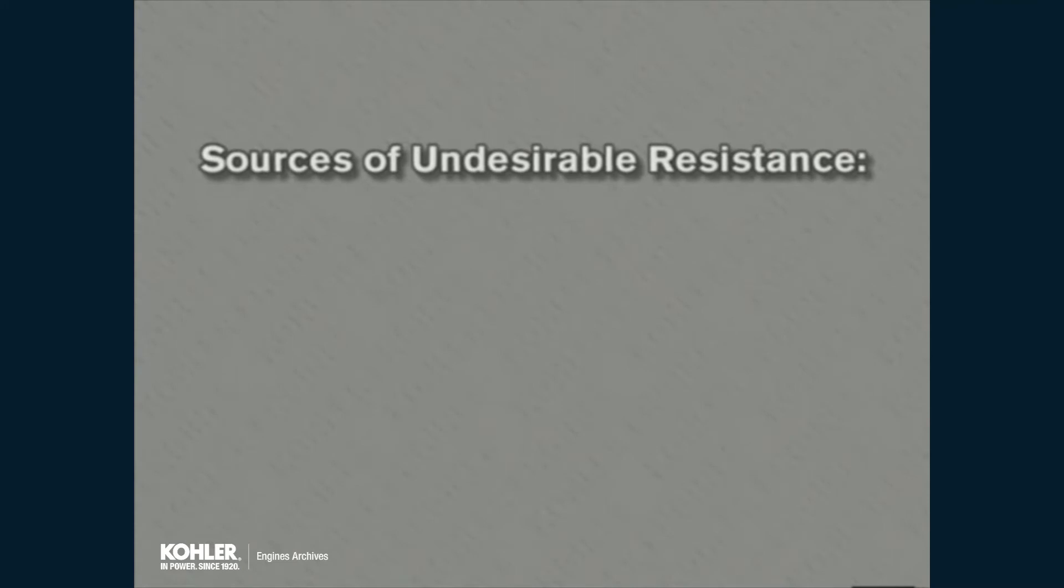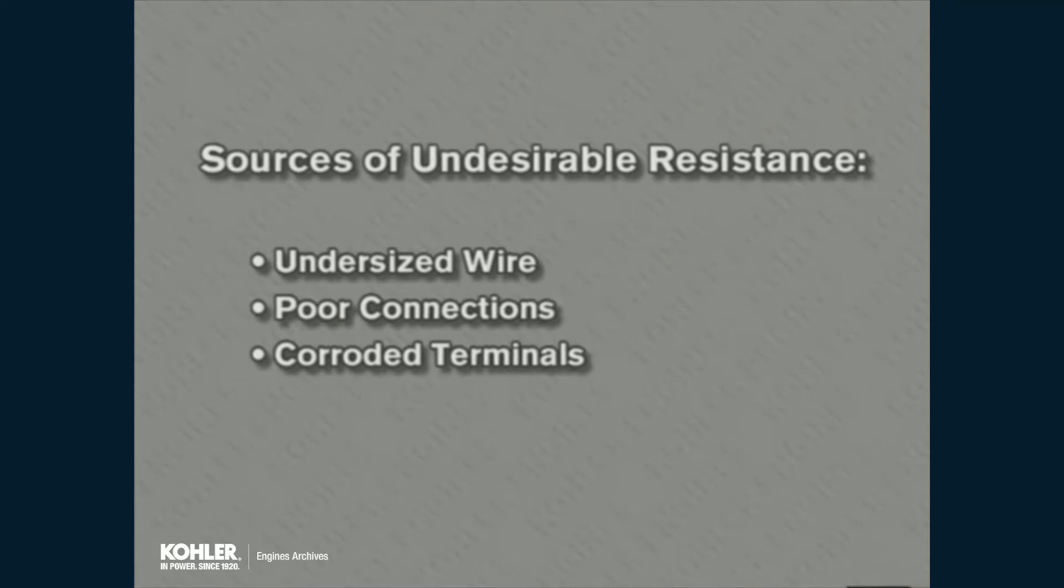Some elements in a circuit may have undesirable resistance, which is reducing current flow and circuit performance. Examples are undersized wire, poor connections, corroded terminals, and burned or glazed switch contacts.